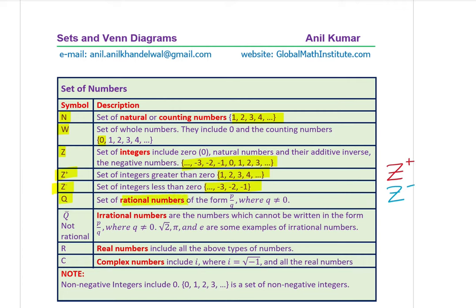Q stands for the set of rational numbers, written in the form p/q where q cannot be zero. Q-bar represents irrational numbers — not rational. Numbers like √2, π, and e are all irrational numbers; they cannot be written in the form p/q. R is the set of all real numbers and includes all the number types discussed so far.